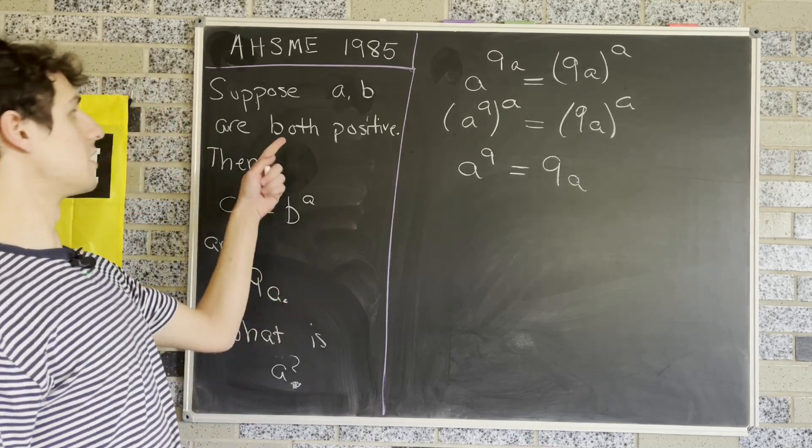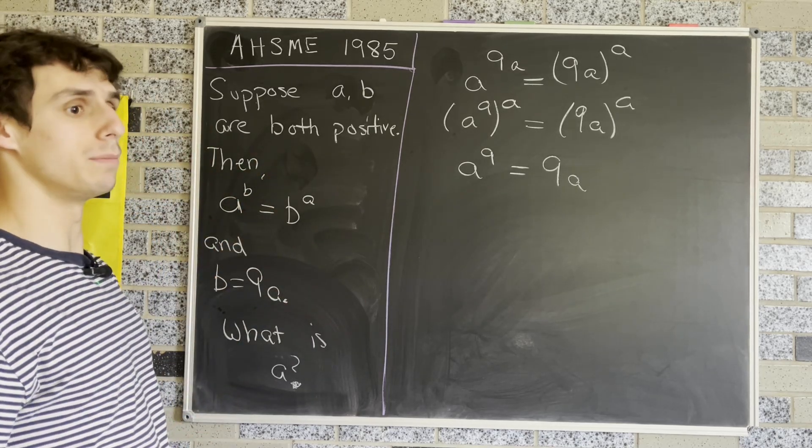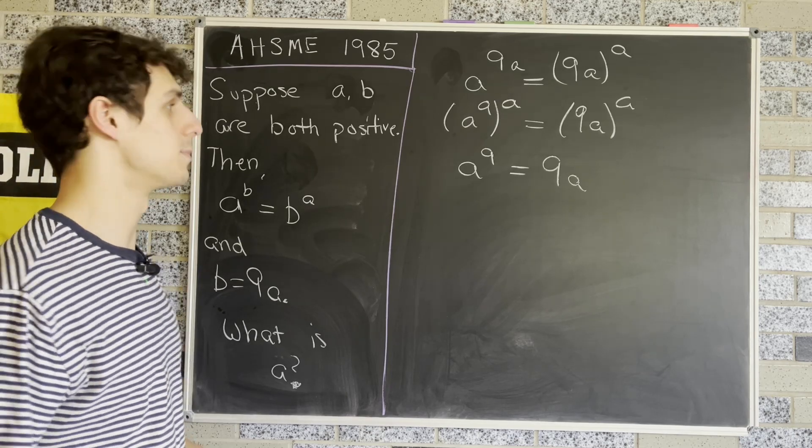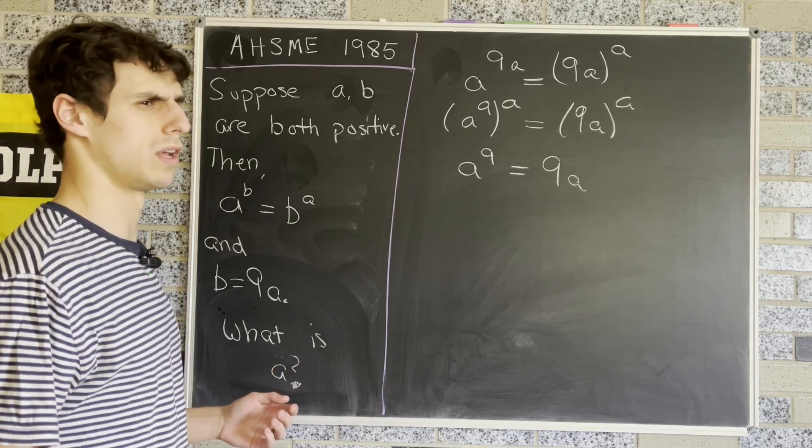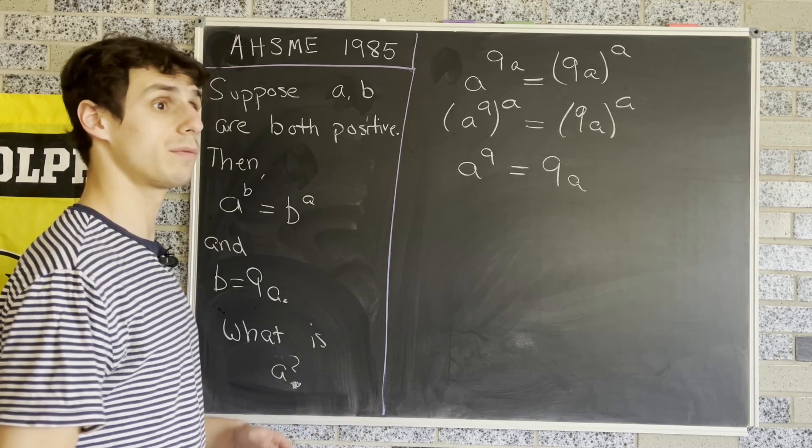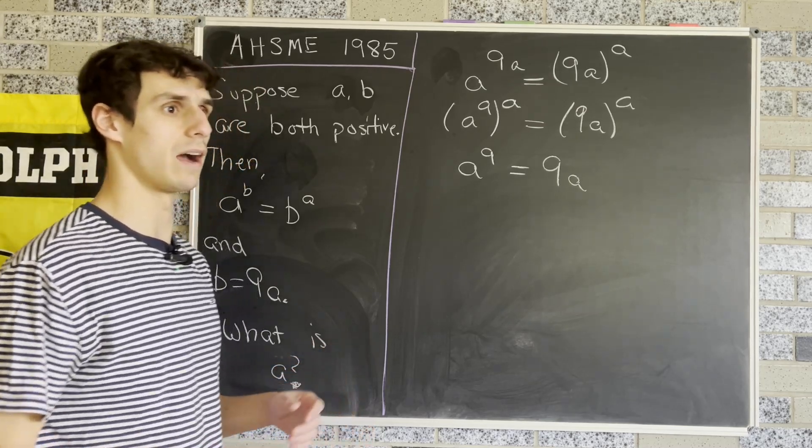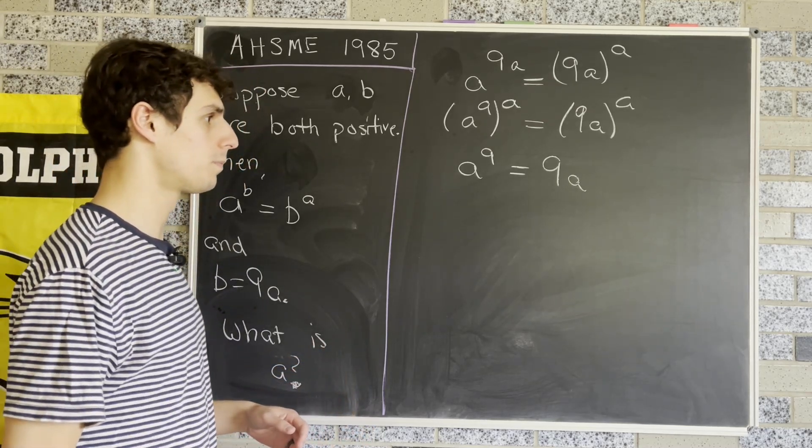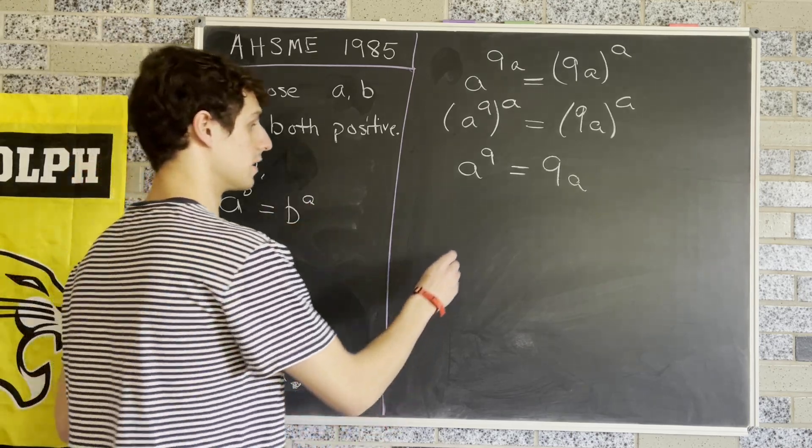Now notice that because we have the stipulation that A and B are both positive, we can divide both sides by A. If we weren't sure A was positive, we couldn't do this because it would eliminate the possibility where A equals zero. But since A is positive, we're allowed to do this.